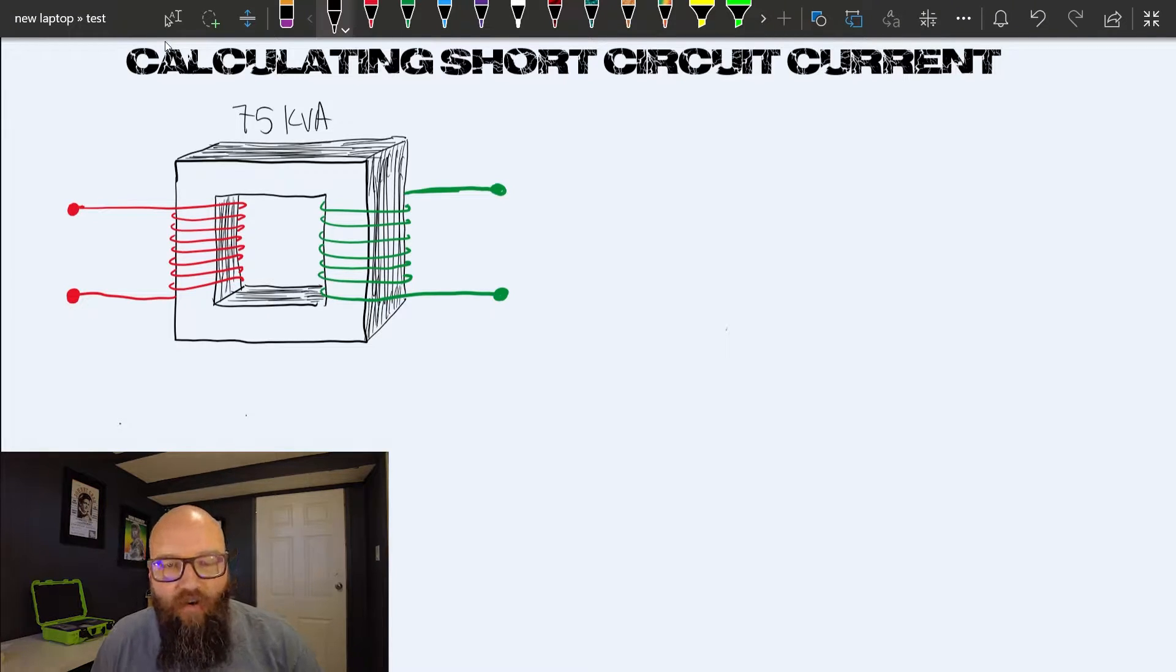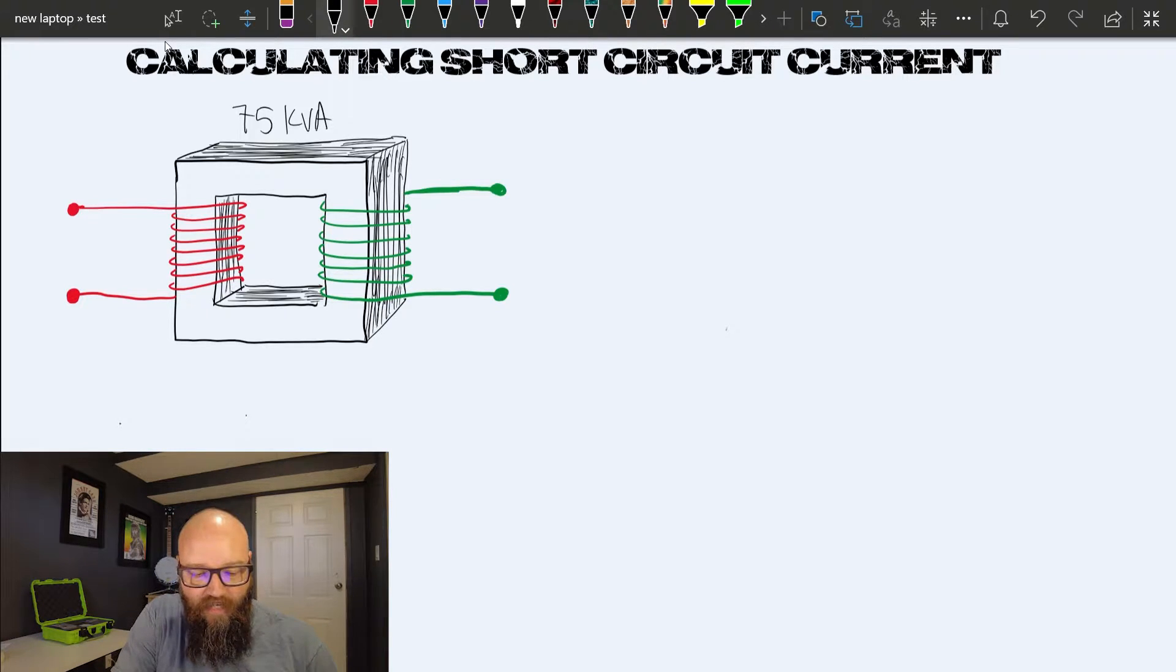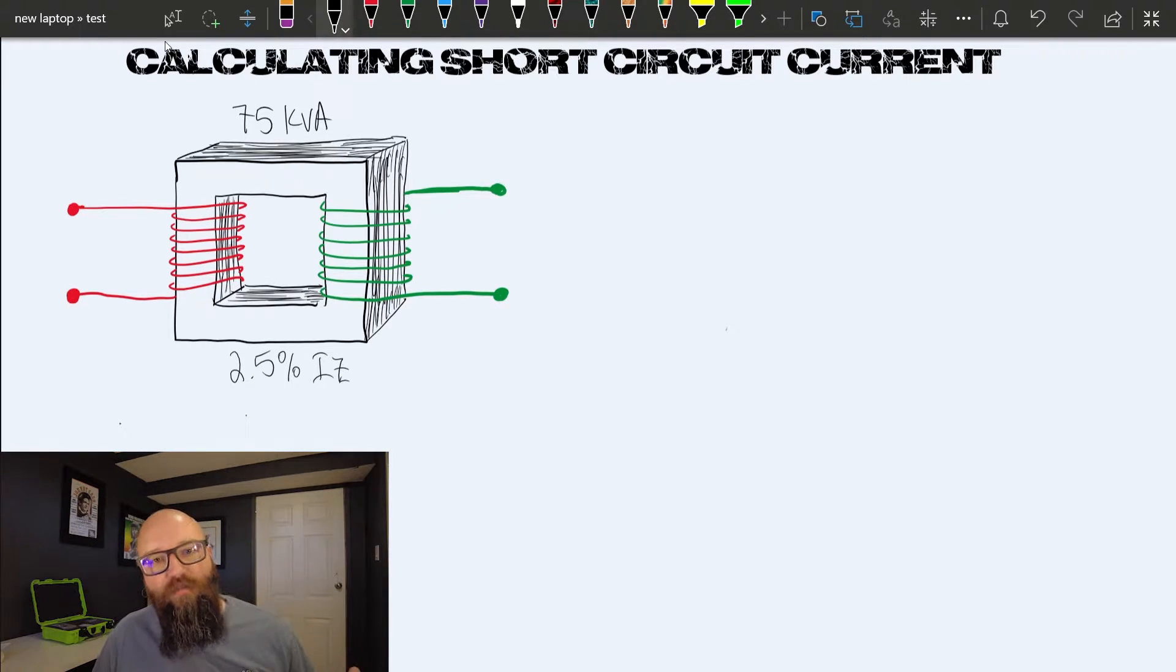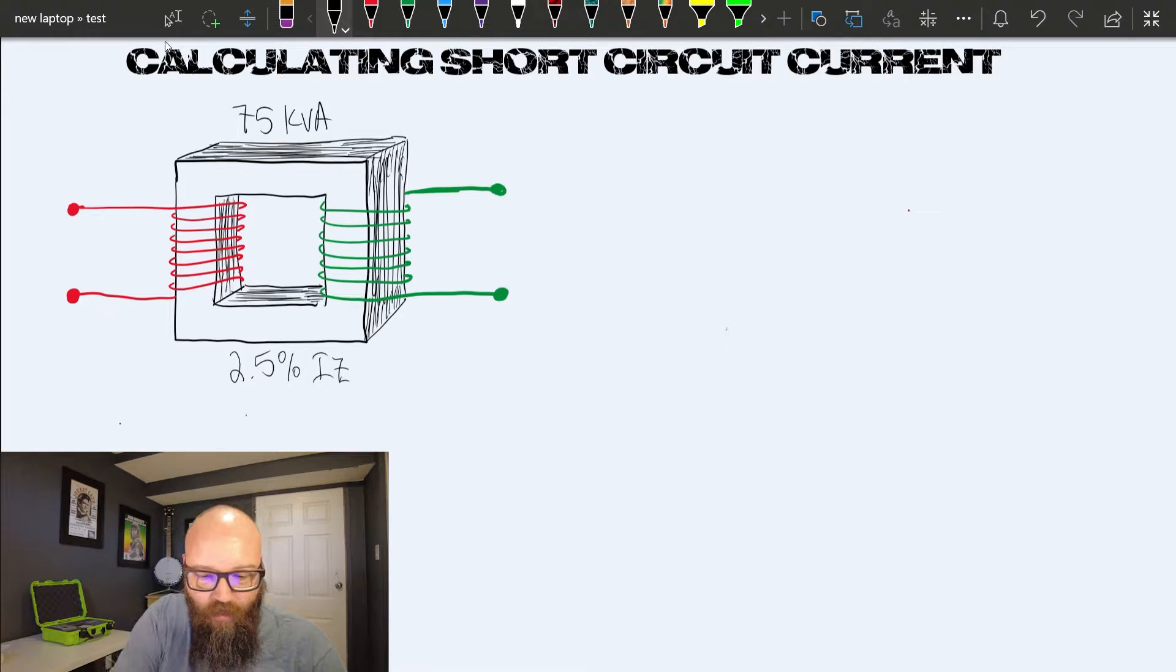If I was calculating the primary or secondary current on this transformer, I would simply use the 75,000 VA. We're going to say this transformer has a percent impedance of 2.5% IZ. These are the numbers I need to perform my short circuit current calculation. Before we do that though, we need some voltages. This is 600V on the primary stepped down to 120V on the secondary.